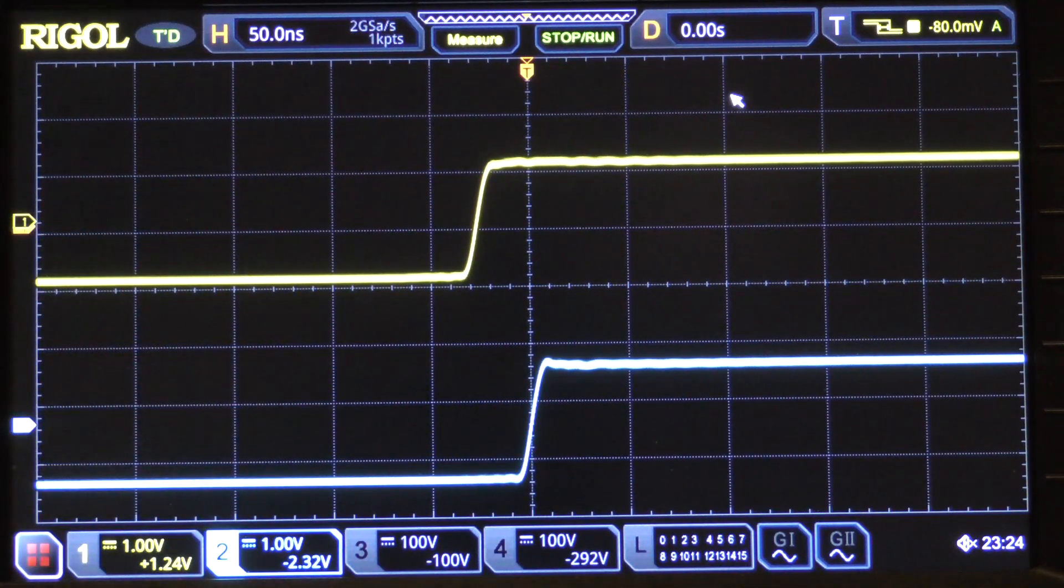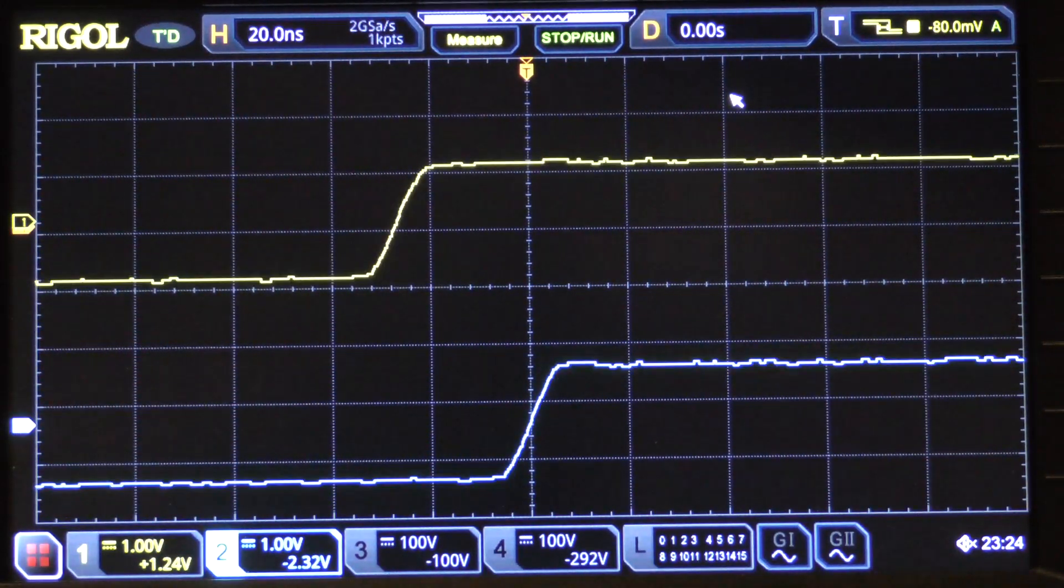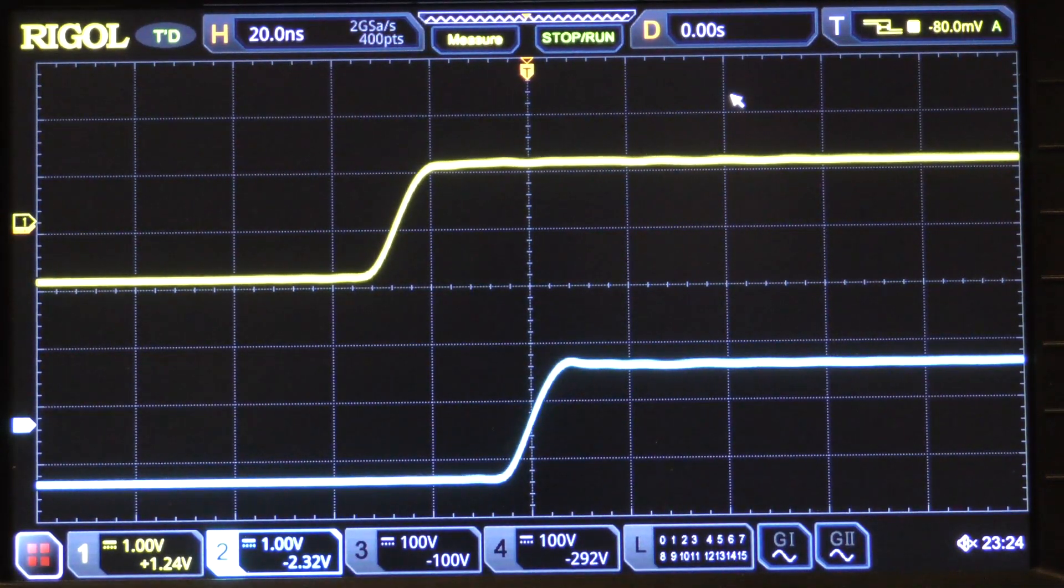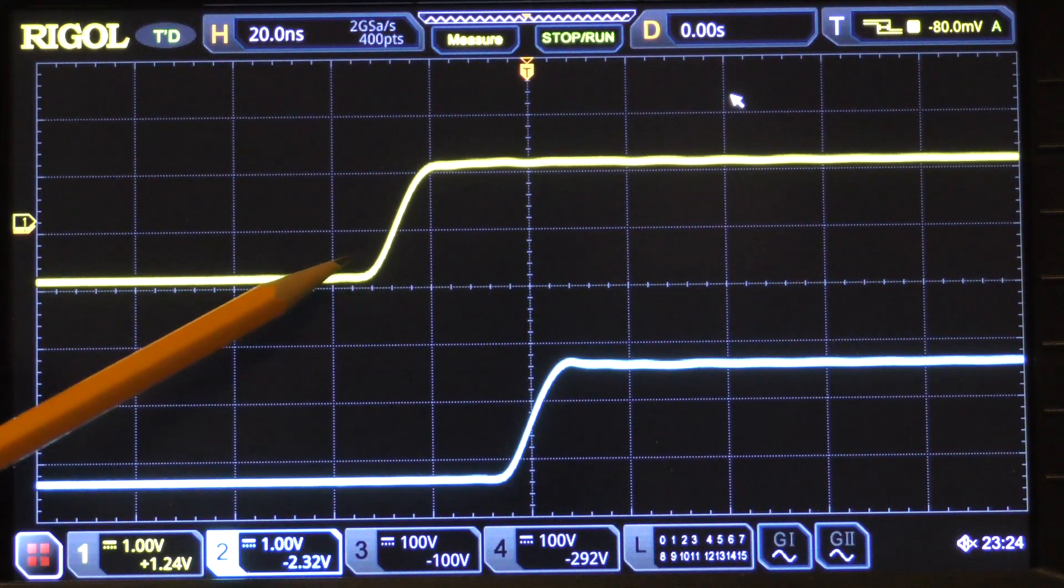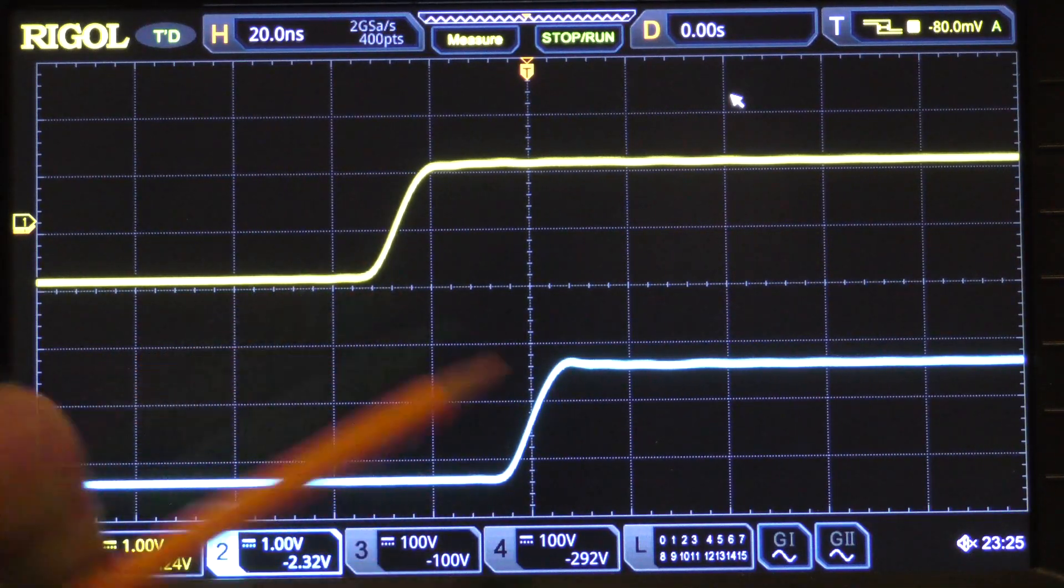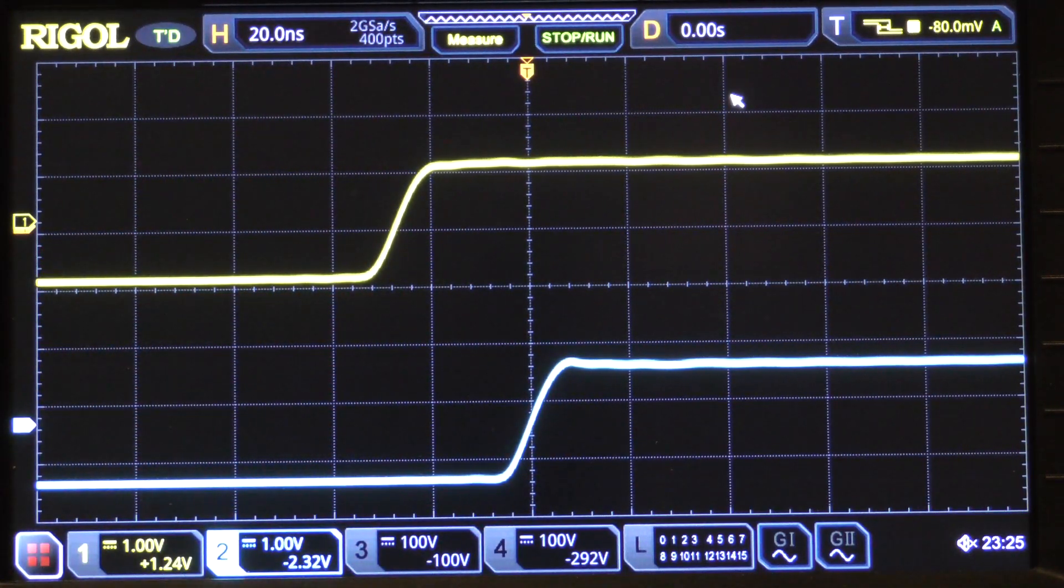This is 50 nanoseconds per division. If we go to 20 nanoseconds per division, you see that this would be 20, this would be 40, so about 30 nanoseconds difference between the two. They're one megahertz square waves.